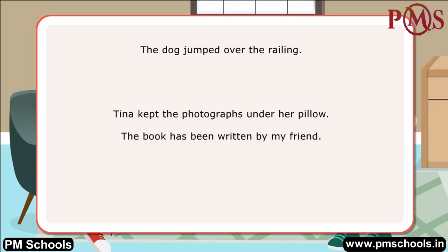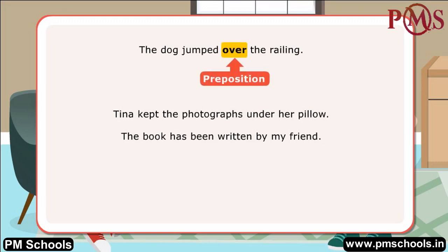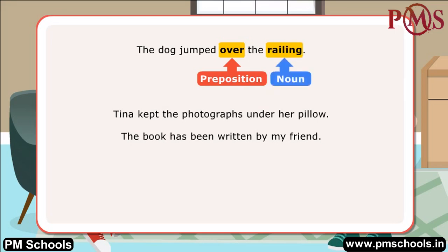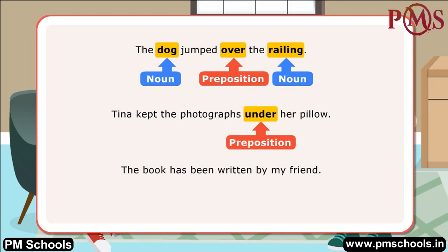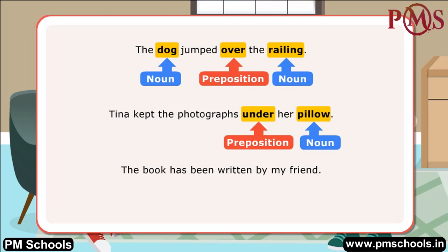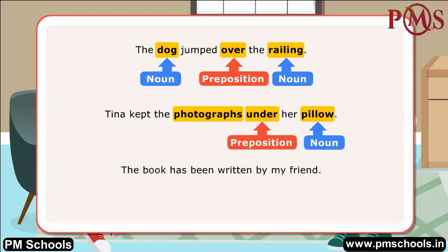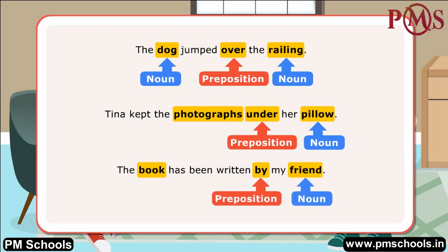In the first sentence, over is a preposition as it is positioned before the noun railing and tells its relationship with another noun dog. In the next sentence, under is a preposition as it comes before the noun pillow and speaks about its relation with another nearby word in the sentence, photographs. In the third sentence, by is a preposition as it tells the relation between the book and the noun friend, before which it is placed.